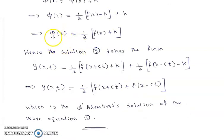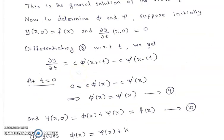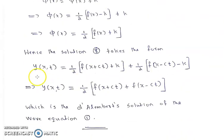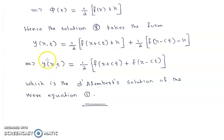Thus we have the values of φ and ψ. By equation 8, the general solution is y(x,t) = φ(x + ct) + ψ(x − ct). Substituting the values of φ and ψ and simplifying (the k/2 terms cancel), we get y(x,t) = (1/2)[f(x + ct) + f(x − ct)]. This is D'Alembert's solution of the wave equation.